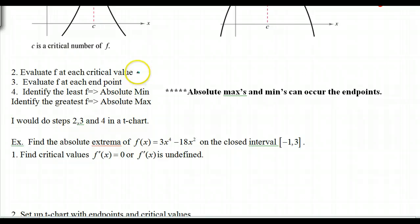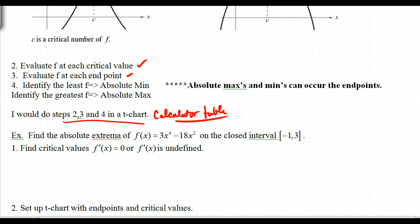Then to find the absolute max or min, we have to evaluate f at each critical value, evaluate f at each endpoint. Remember, we have to compare these, and then identify the least, that would be the absolute minimum, and identify the greatest, that would be the absolute maximum. I like to do all this in a t-chart. You also can use your calculator table to help figure this out. Table works great.